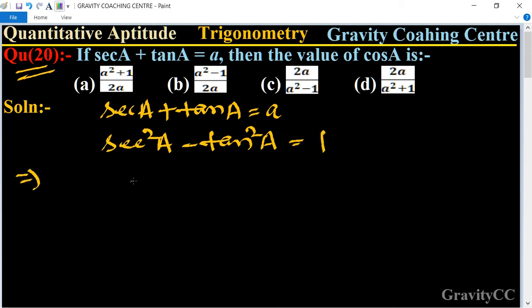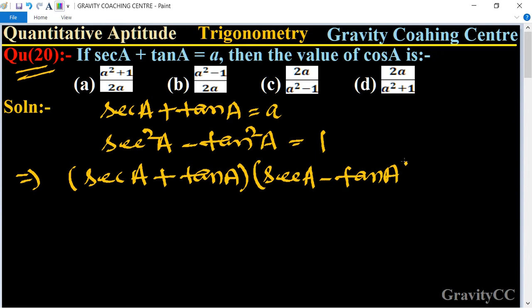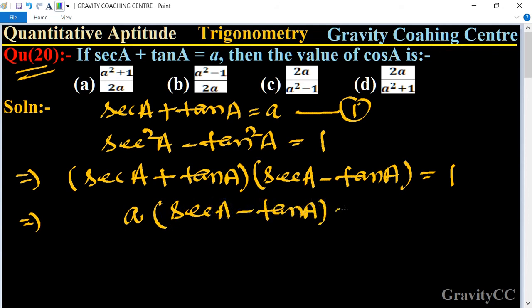So we will apply the a² - b² identity: (sec A + tan A)(sec A - tan A) = 1. Therefore, sec A - tan A = 1.